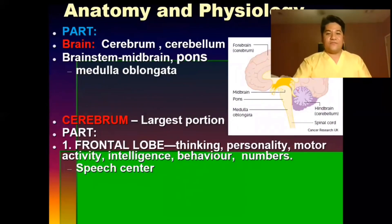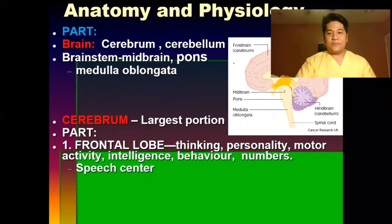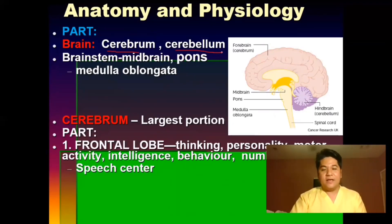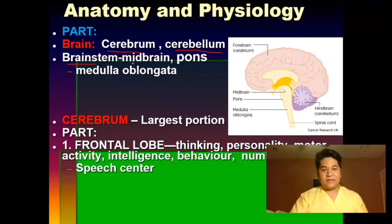The brain has three main parts: the cerebrum, the cerebellum, and the brainstem. The cerebrum is the largest portion, the cerebellum is the second largest, and the brainstem is the smallest part of the brain, which divides into the midbrain, pons, and medulla oblongata.